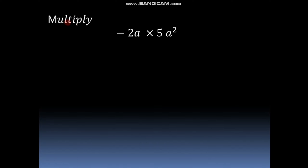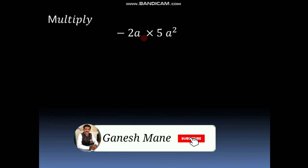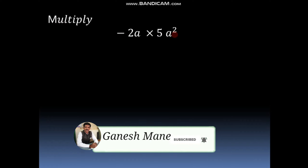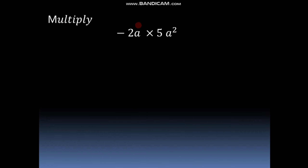Today our main point is how to multiply two polynomials. Those polynomials may be monomial, binomial or trinomial. So let us have an example and see how to multiply the polynomials. The question is: multiply minus 2a into 5a square. As we can see here there are two monomials — minus 2a is the first monomial and 5a square is the second monomial, and we have to take a product of these two.